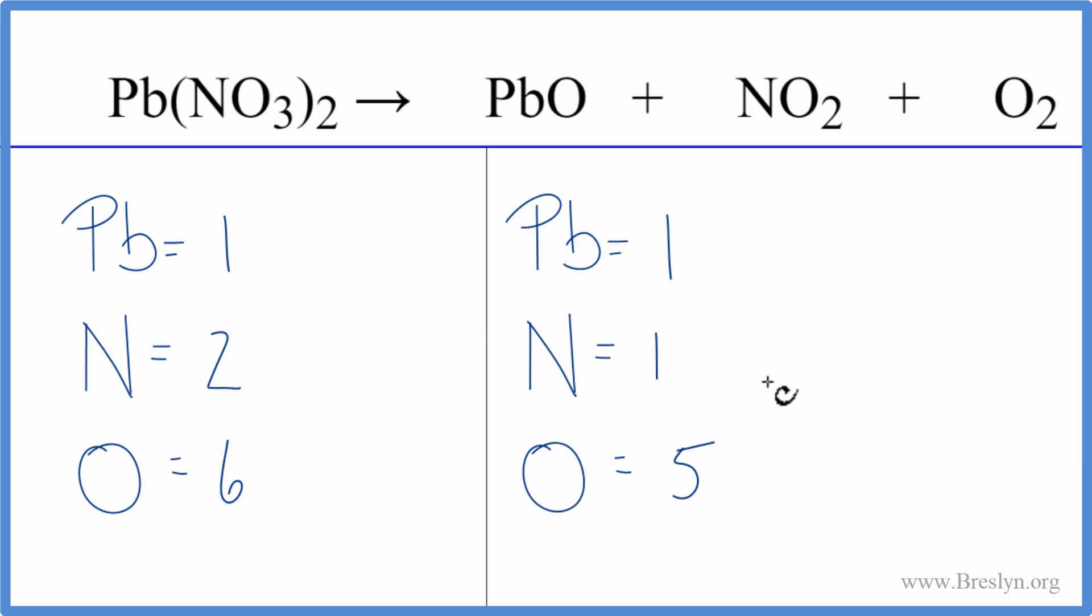Let's start by balancing the nitrogens, see how that works out. We could put a two right here in front of the NO2, then we'd have one times two for the nitrogen, that would be balanced. We need to recalculate these oxygens, though. So we have the one plus two times two is four, plus two, so that gives us seven oxygens.